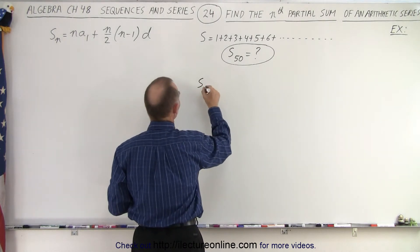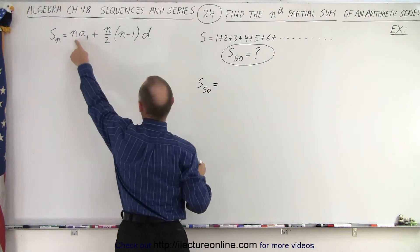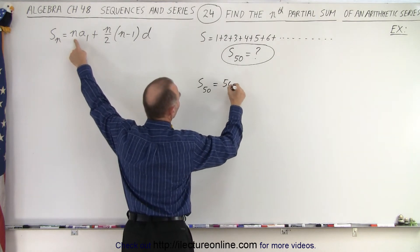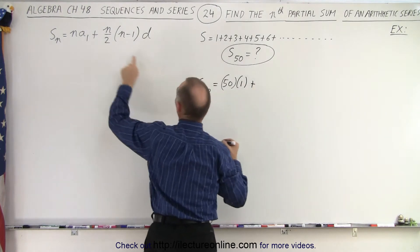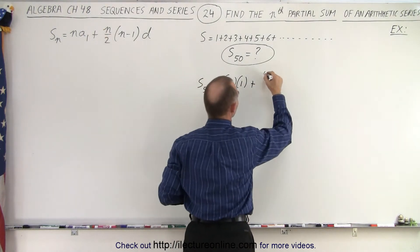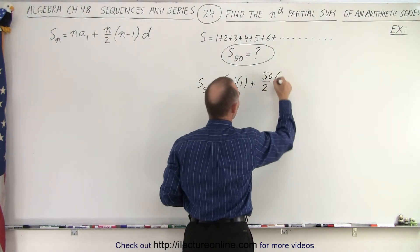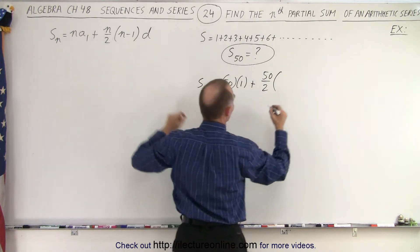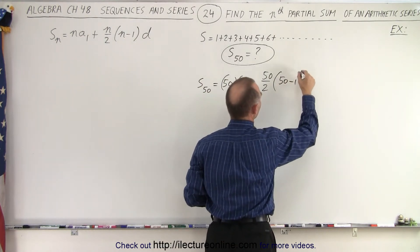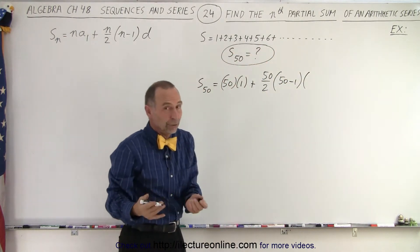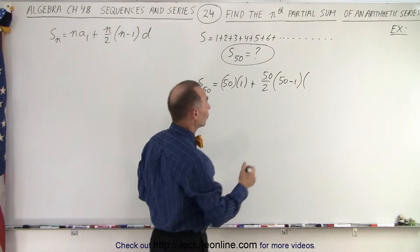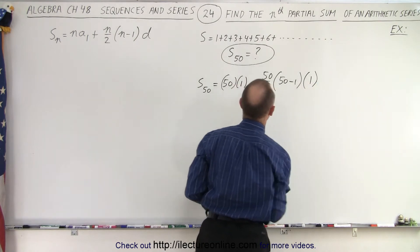S sub 50 is equal to 50 times the first term, in this case the first term is 1, plus 50 divided by 2, times 50 minus 1, times the common difference. And in this case, the common difference is just equal to 1, the difference between two consecutive numbers.